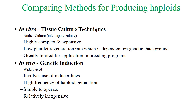Comparing the methods of producing haploids, there are two methods: in vitro and in vivo. In the in vitro method, tissue culture techniques are used — anther culture or microspore culture. These have high complexity and are expensive, with low plantlet regeneration rate which is dependent on genetic background, and are greatly limited for application in plant breeding.